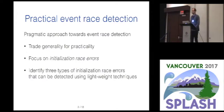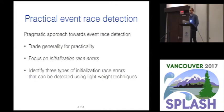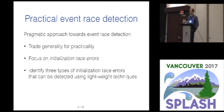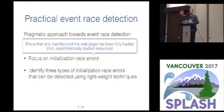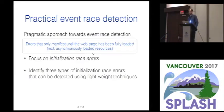In this work we've taken a more pragmatic approach towards event race detection. Specifically we try to trade some of the generality offered by previous tools for practicality. We choose to focus entirely on initialization race errors — errors that only manifest during the actual loading of the web page, including asynchronously loaded resources. We identify three types of race errors that can be detected using lightweight techniques.